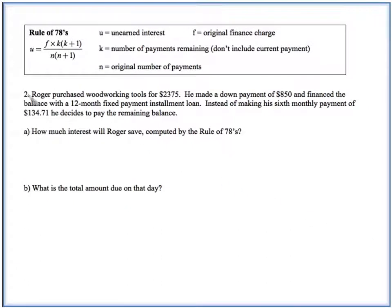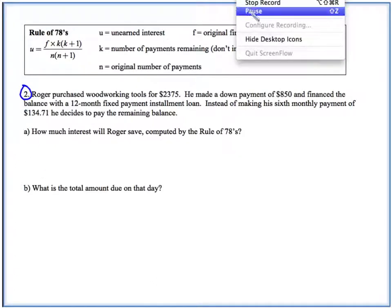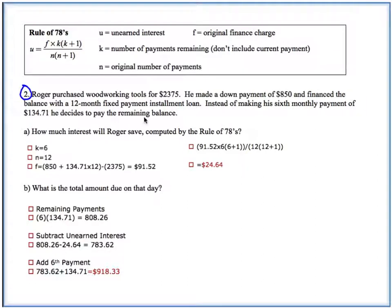I want you to try number two on your own. Go ahead and pause the video and come on back when you're done to check your work. All right. Welcome back. Go ahead and check your work. Did you find K, N, and F? And then plug them into the rule of 78. So your unearned interest should be $24.64. Then to find the total amount due on that day, find your remaining payments. Subtract your unearned interest and then add in that last payment. And you should have found that $918.33 was due on that day. So that is finding unearned interest and paying off a loan using the rule of 78.